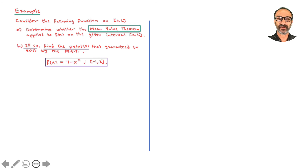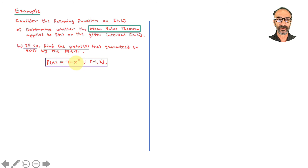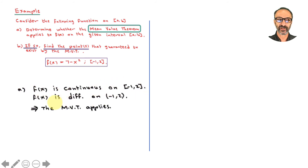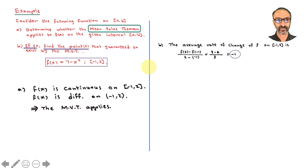Let's move on to the mean value theorem examples. Consider the following function on the closed interval A to B — determine whether the mean value theorem applies and find the guaranteed point. First example: f(x)=7−x² on [−1,2]. It's a polynomial, so it's always continuous and differentiable. The mean value theorem applies. The average rate of change from −1 to 2 is F(B)−F(A) over B−A, which equals negative 1.